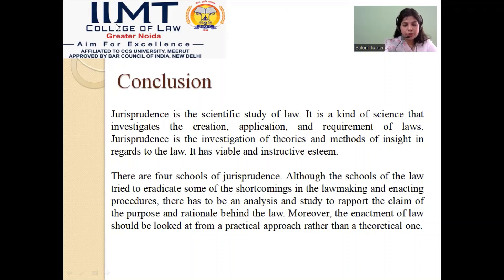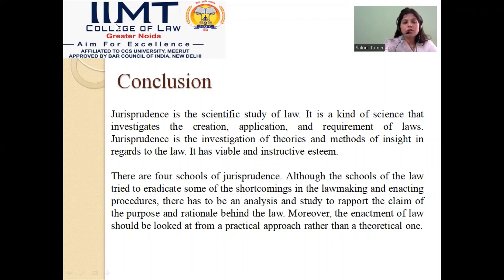Third, we took the philosophical school that emphasized upon reason. We all are human beings and as human beings we have a certain level of consciousness, and we are supposed to distinguish between right and wrong — what is justified and what is not. Many jurists emphasized that jurisprudence is the study of right and wrong. Ulpian stated that jurisprudence is nothing but the ability to distinguish between what's right and what's wrong — and that is consciousness, which must be there in every individual. Hence the philosophical school emphasized upon the importance of reason.